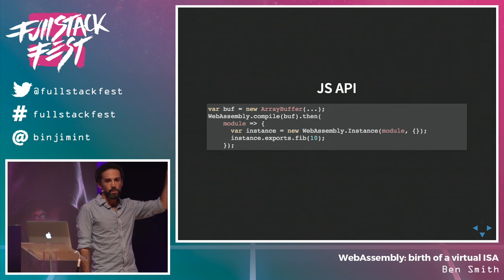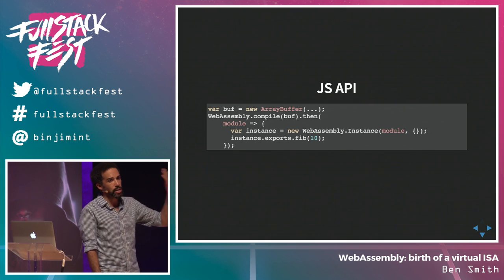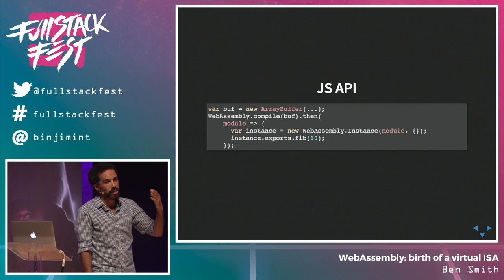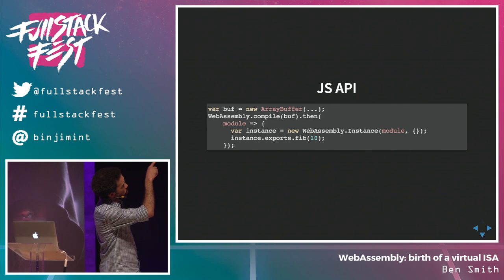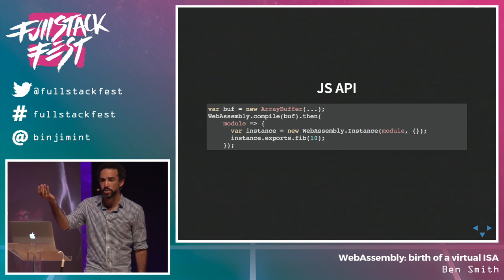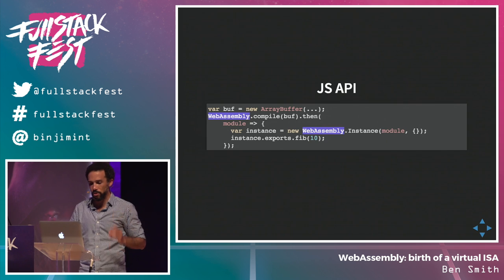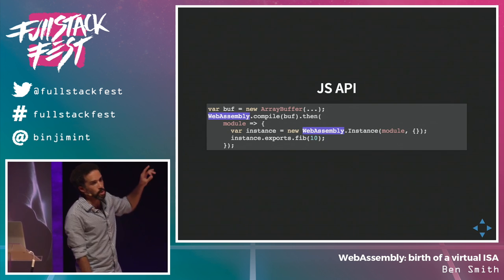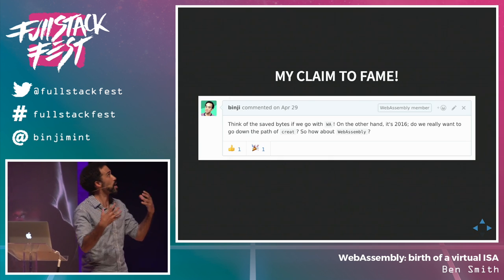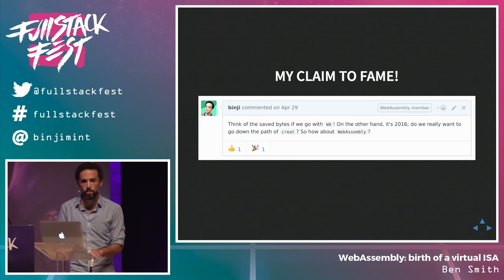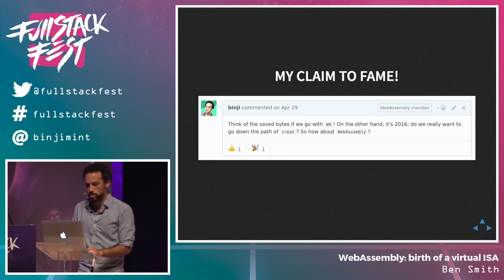Now we load it via the JavaScript API. We've got our array buffer — that's going to be our WebAssembly module, obtained maybe via fetch. Then you call 'WebAssembly.compile()' — that returns a promise. When you get your compiled module back, you instantiate it with 'new WebAssembly.Instance(module)' and pass in a collection of import functions. Then finally you call your Fibonacci function. One thing to note: the top-level namespace is 'WebAssembly' — that was my suggestion. They were all saying just call it WASM, but I said why not use the full name.